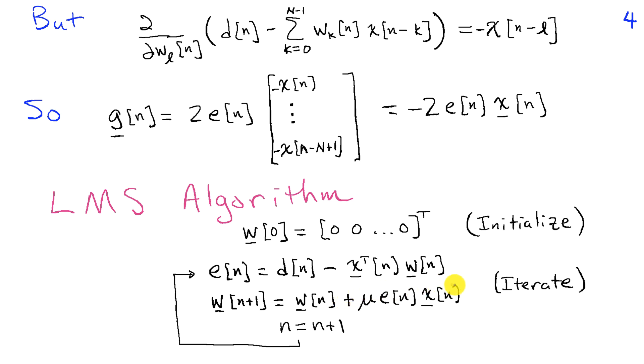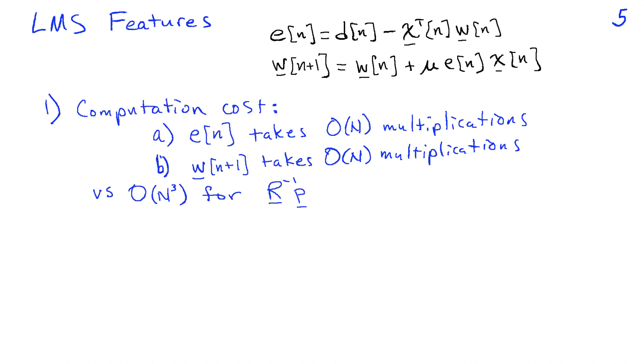Once we have the error, we can update our solution for w. So w at step n plus 1 is just the w at step n plus mu times e of n times x of n. The second term, recall, was negative mu over 2 times the gradient, and that simplifies to mu times e of n times x of n. Then we'll increment n and repeat this process, so we're iterating through this algorithm.